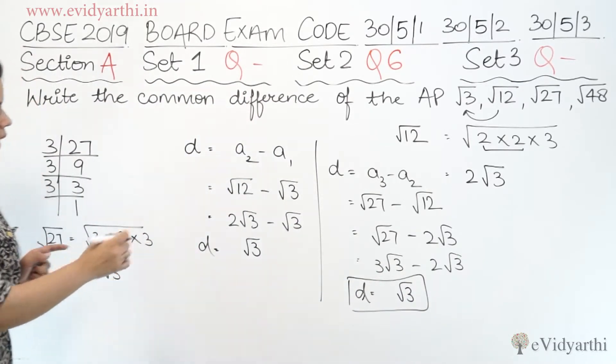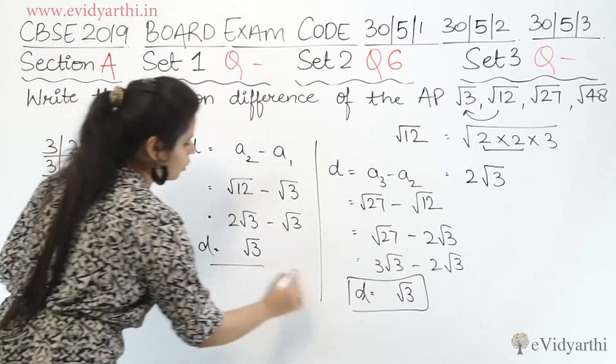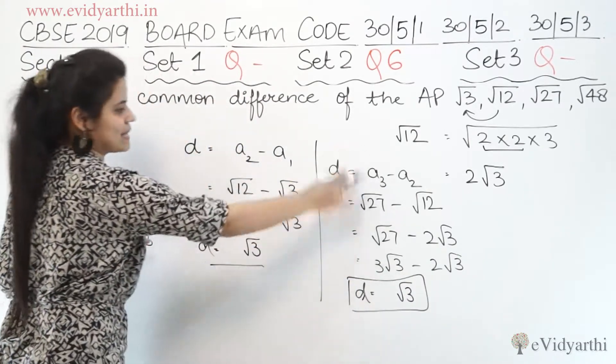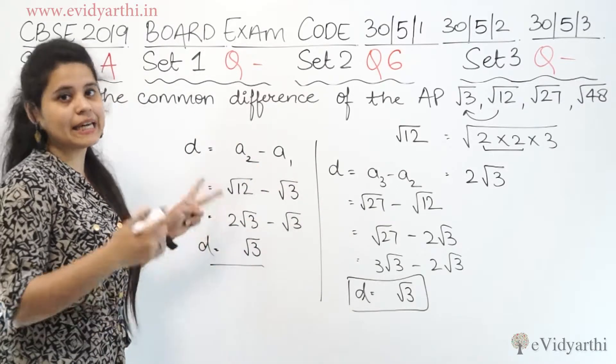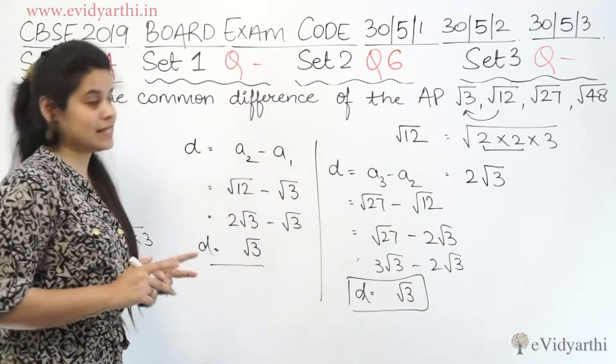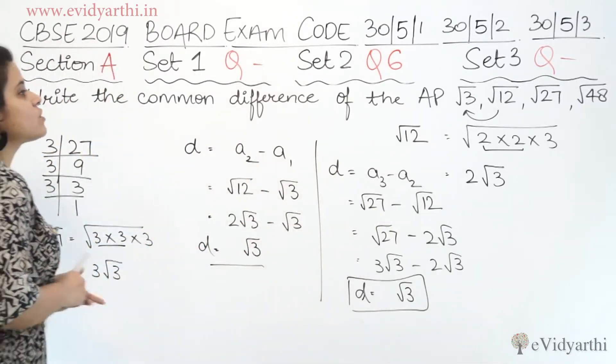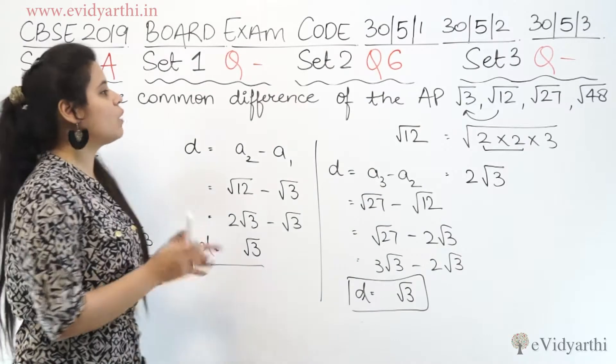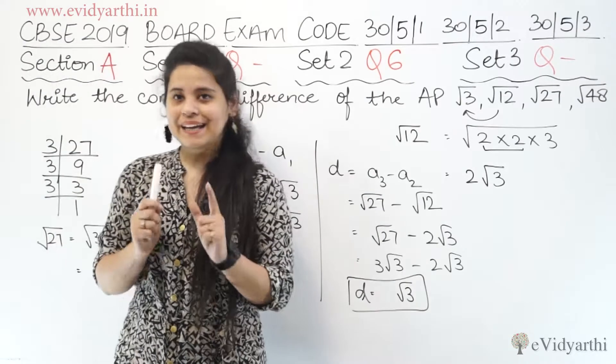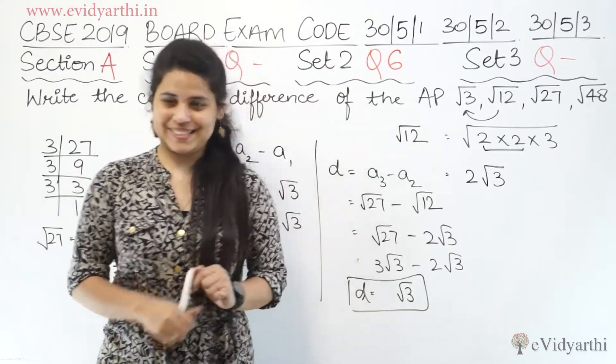So you can see both give the same common difference. Both methods confirm d = √3, which is correct. This was question number 6 of set number 2. Now we'll move to the next question.